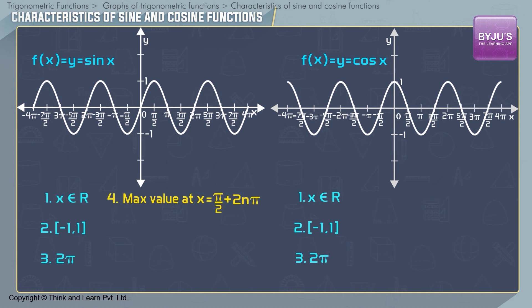The maximum value of y = sin x, that is 1, occurs when x = π/2 + 2nπ, where n is any integer. The maximum value of y = cos x occurs when x = 2nπ, where n is an integer.